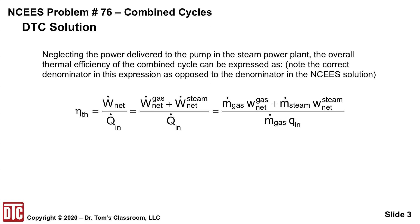There's a W dot in the numerator and a lowercase Q in the denominator. It's not consistent. And they don't highlight the fact that the W dot net is the sum of the net from the gas turbine plus the net from the steam power plant, and then the separation of those into M dots times work per unit mass or heat transfer per unit mass with the M dot of the gas and M dot of the steam.